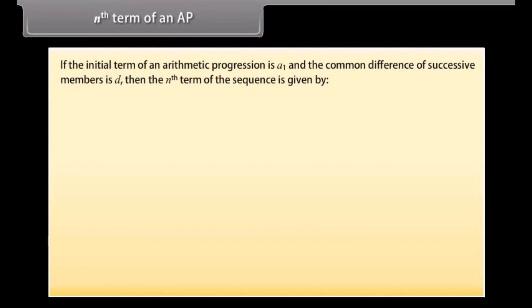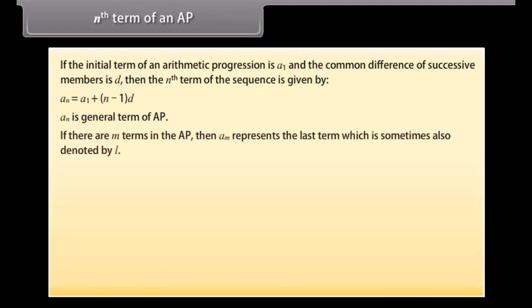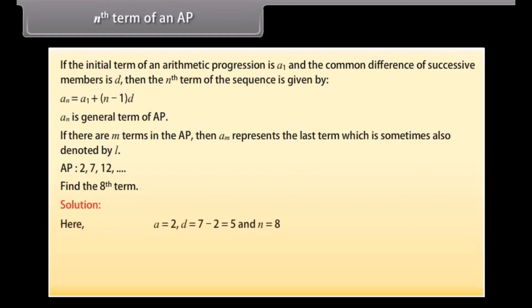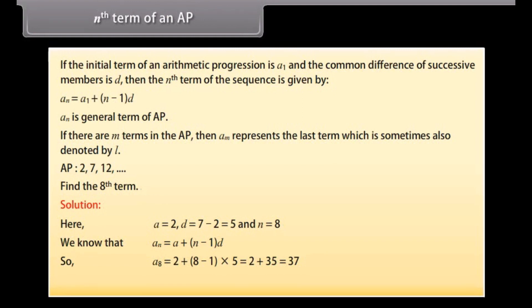If the initial term of an arithmetic progression is A1 and the common difference of successive numbers is D, then the Nth term is given by AN equals A1 plus (N minus 1) into D. This is also called the general term. If there are M terms, then AM represents the last term, sometimes denoted by L. Using this formula, let's find the eighth term of the given AP. Here A equals 2, D equals 5, and N equals 8. So A8 equals 2 plus (8 minus 1) into 5, equals 2 plus 35, equals 37.